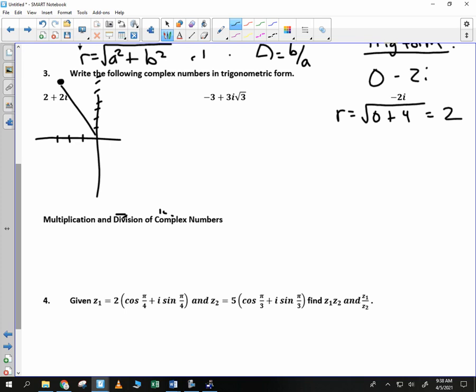And then, we say tangent of theta is equal to b divided by a. Undefined. Thank you. Remember, it's b divided by a. If zero is on the bottom, it's undefined. If zero is on the top, then it's zero.